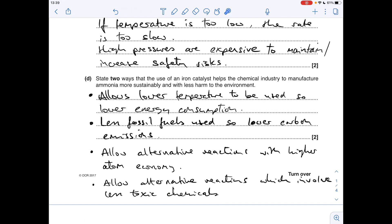Part D now: state two ways the use of the iron catalyst helps the chemical industry manufacture ammonia more sustainably and with less harm to the environment. I've come up with four there, so any two of these would be fine.